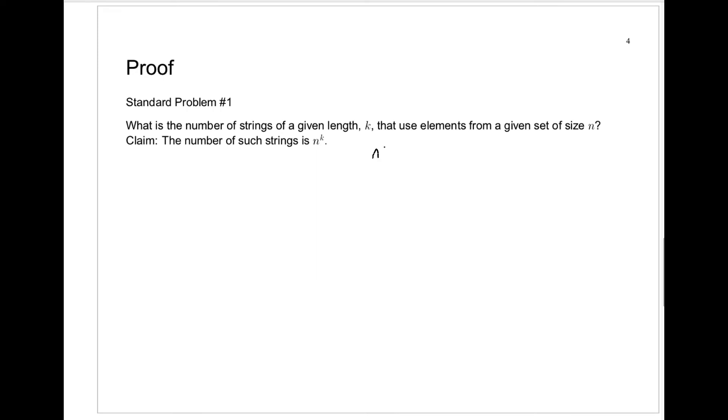And we probably should have been very formal here in writing here. n is a natural number. That means it's 1, 2, 3, etc. One of these numbers. A positive integer is another way to say that. And k also has to be a natural number. And no matter what you pick for n and k, the claim is that you can count the number of strings of length k from a set of size n by just using n to the k.